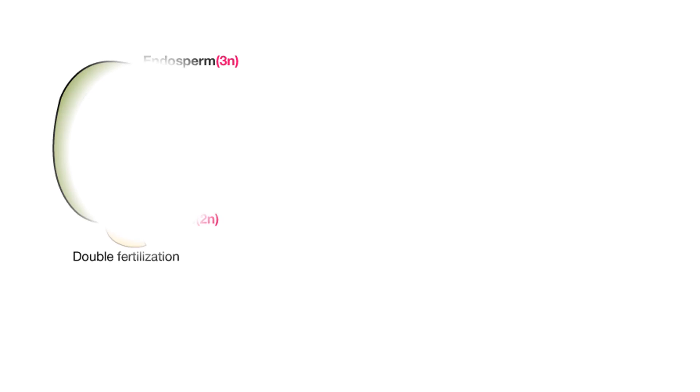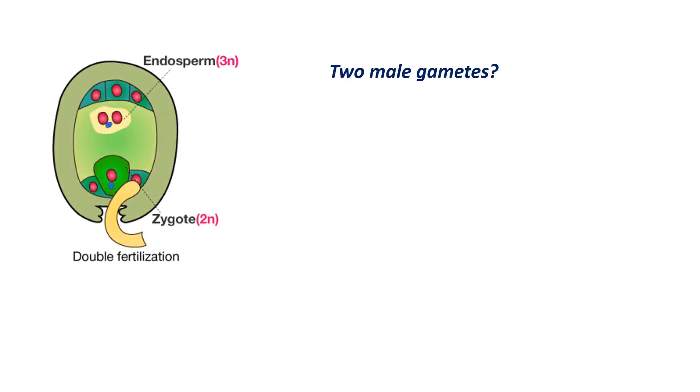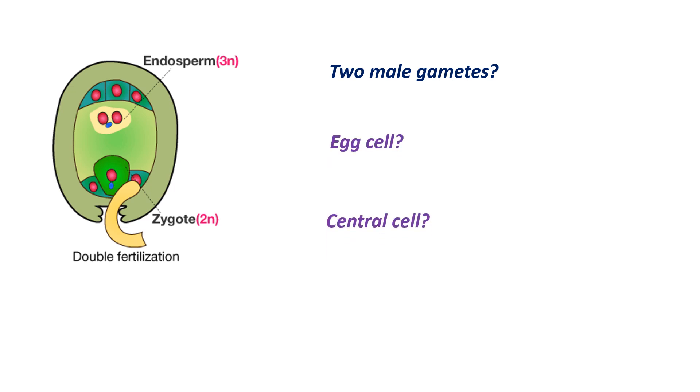The last video was about the structure of a flower and sexual reproduction in angiosperms. If you haven't watched it, the link is provided in the description. You may have questions about double fertilization — why and how there are two male gametes when there is only one female gamete, what the egg cell and central cell are, why the egg cell is haploid and the central cell is diploid, and whether both belong to the same structure, the embryo sac.